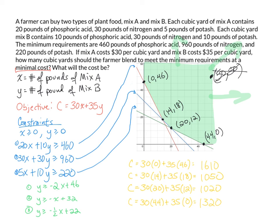Here are all the corner points substituted into the cost function. The x-coordinates are 0, 14, 20, and 44; the y-coordinates are 46, 18, 12, and 0. Since we are minimizing, we pick the smallest value: $1,020 per month. The farmer should buy 20 cubic yards of Mix A and 12 cubic yards of Mix B to minimize the cost of the plant food. The minimal cost will be $1,020.